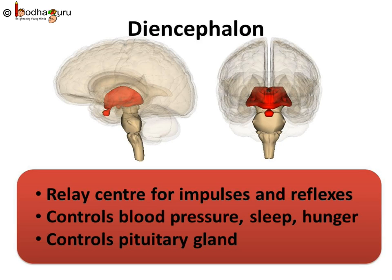Diencephalon is also located in the forebrain. It is a rhomboidal shaped lobe that sits between the cerebrum and the midbrain. It is mainly divided into the thalamus and hypothalamus. This part performs some very important tasks — it is the relay centre of sensory impulses such as pain, temperature, etc.